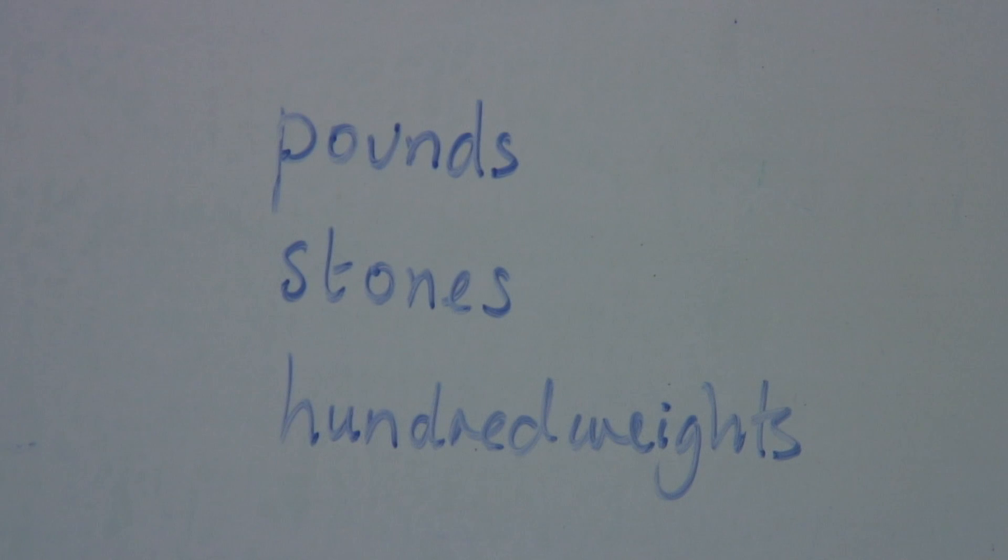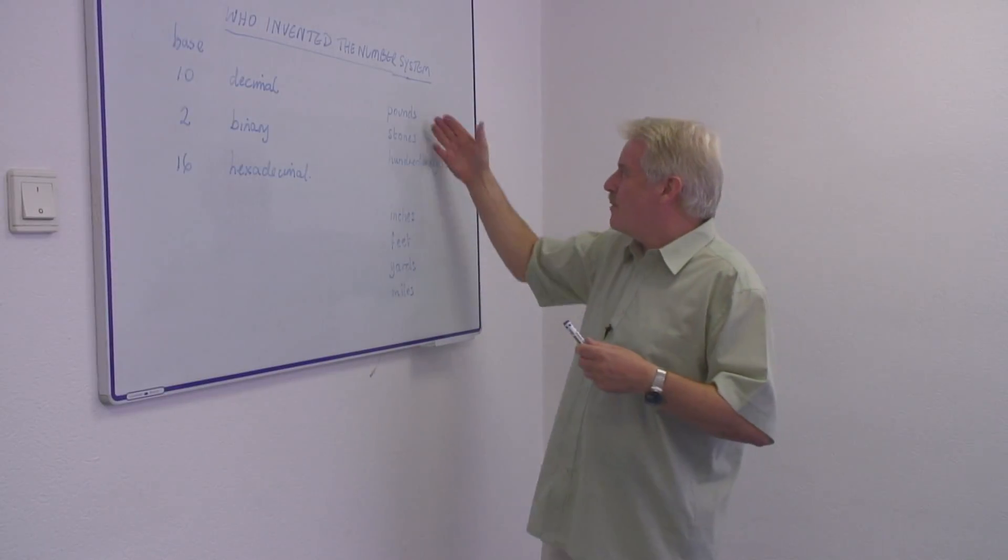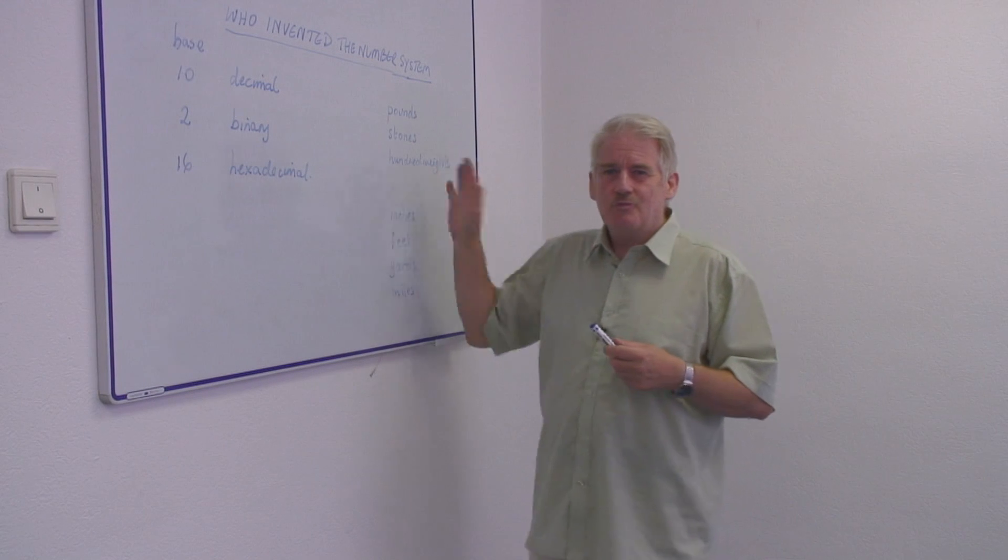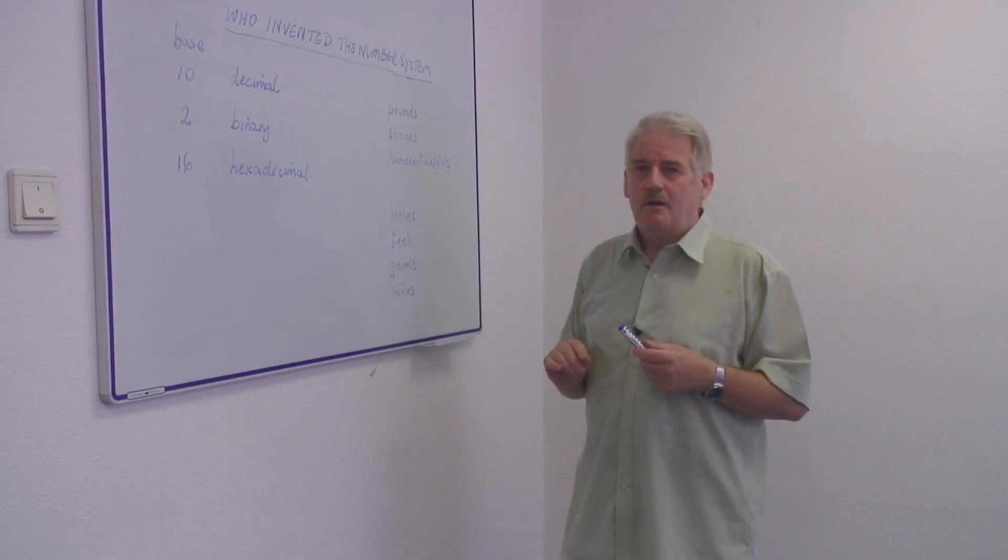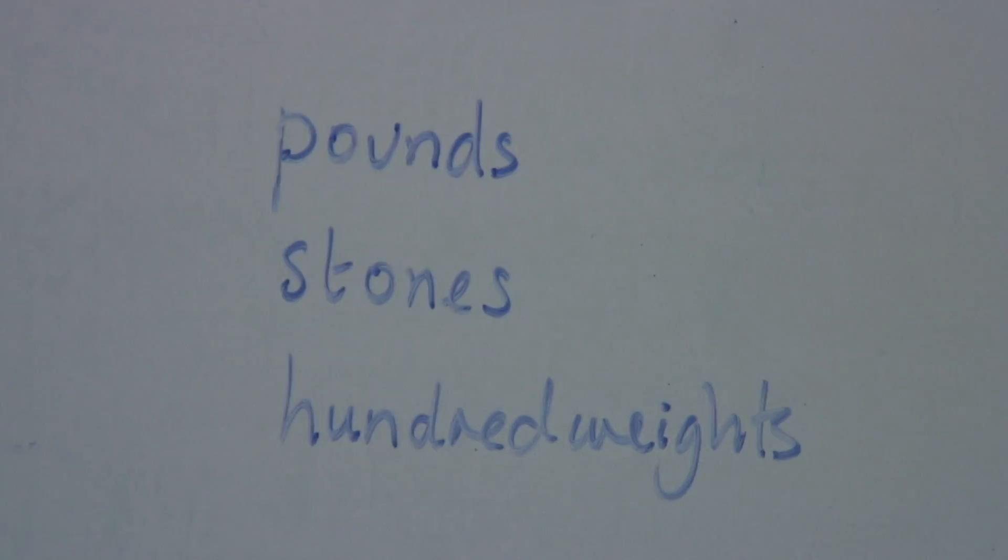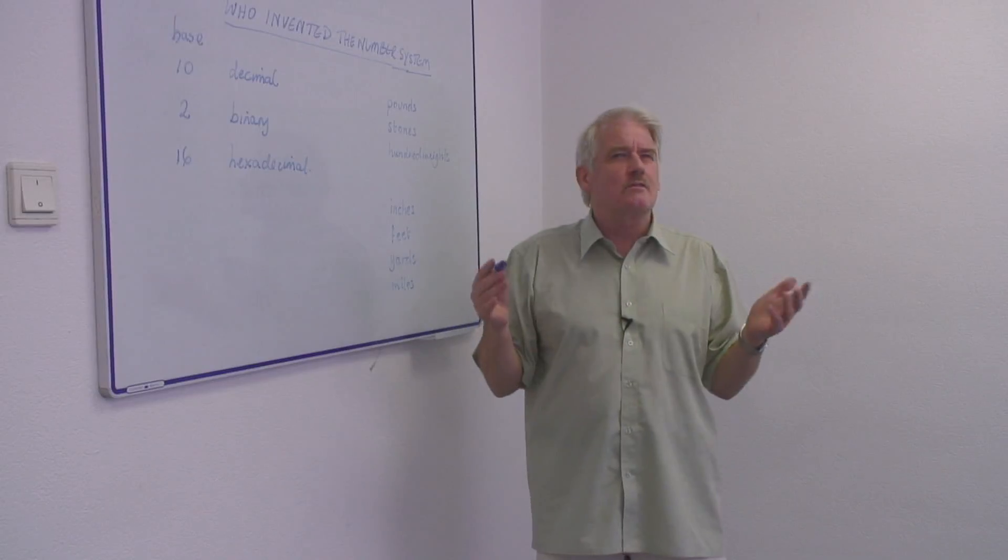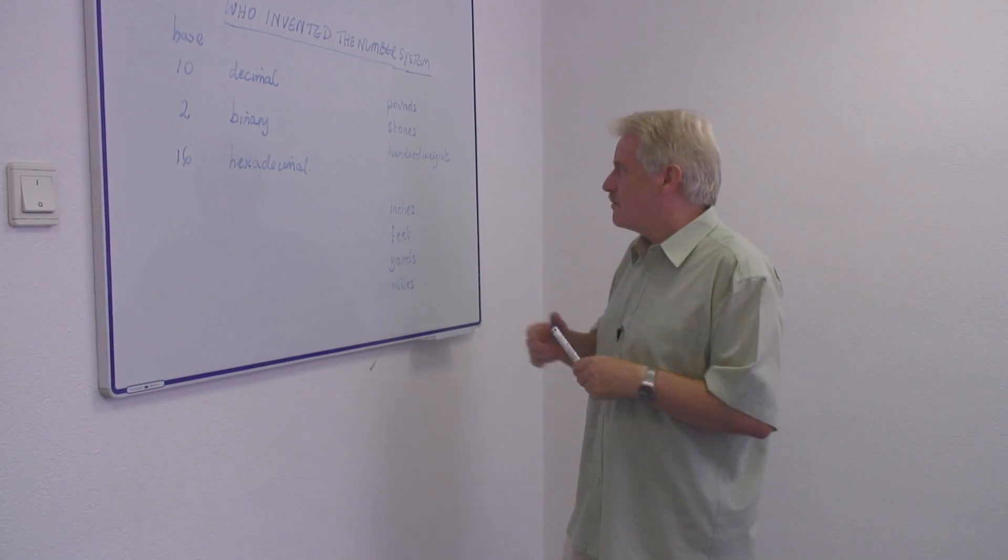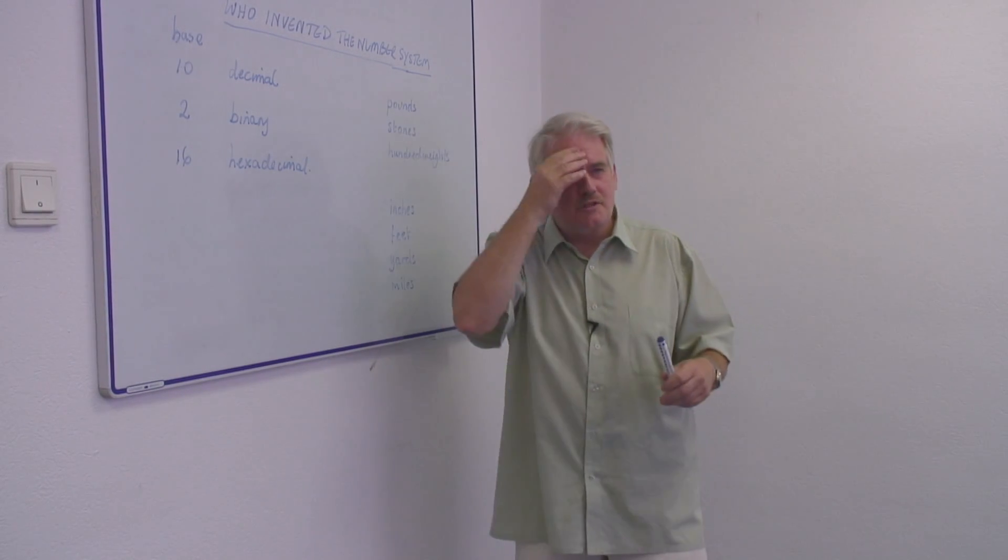Now, you people in the modern world will not remember these weights because we don't use them anymore. But these were not easy systems. The system of pounds to stones - how many pounds were there in a stone? Fourteen pounds in a stone. How many stones in a hundredweight? Does it really matter?